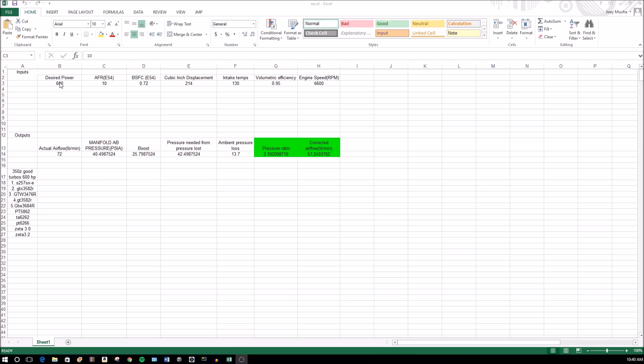Here's a little Excel sheet I made. You type in your desired power here. Here is an airflow ratio, I'm using E54, 54 percent ethanol. I guesstimated about 10 because gasoline is about 14.7, E85 is about 8.5, so I just threw in 10. It might be a little higher or lower.